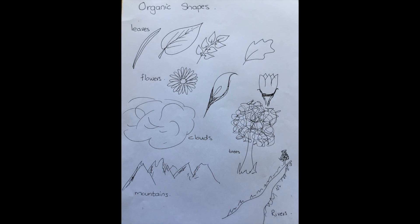Let's have a look at these organic shapes: the shapes of our leaves, the flowers, the clouds in the sky, the variety of different leaves on the trees, the mountains, and even our rivers.